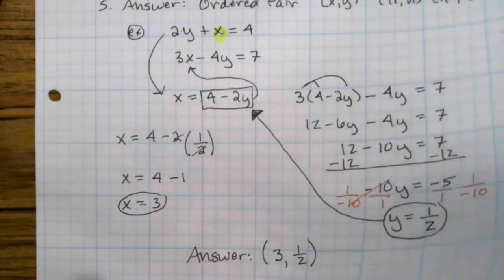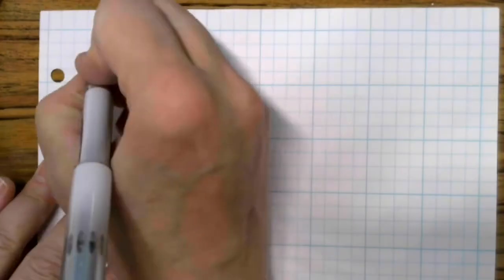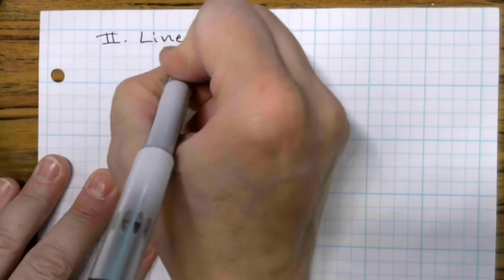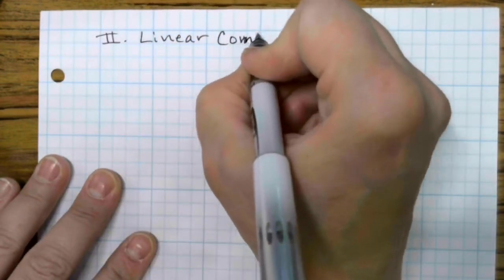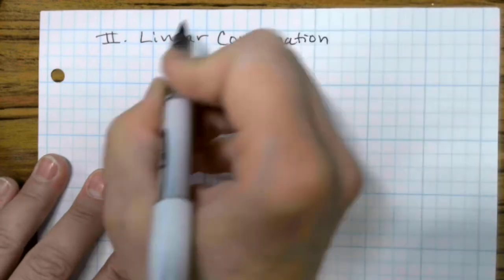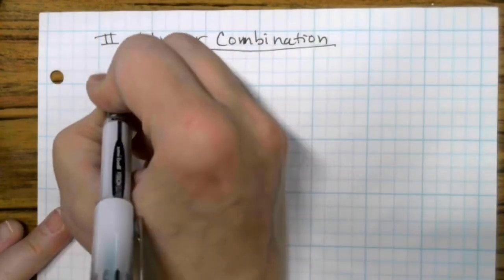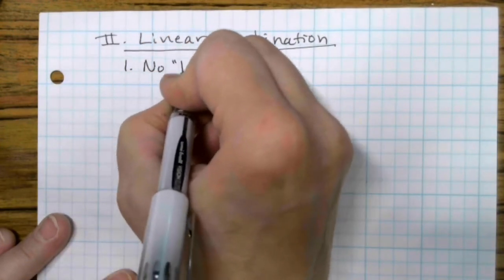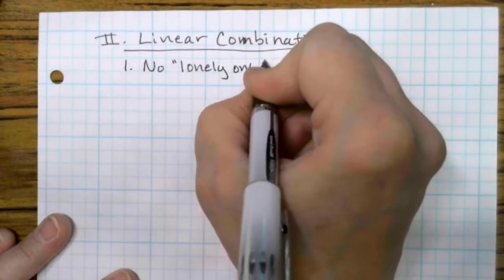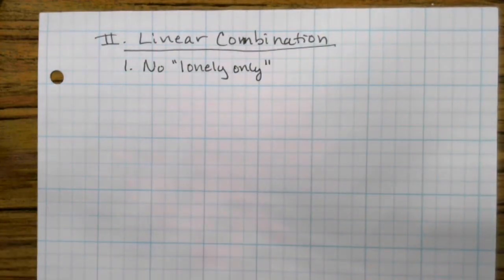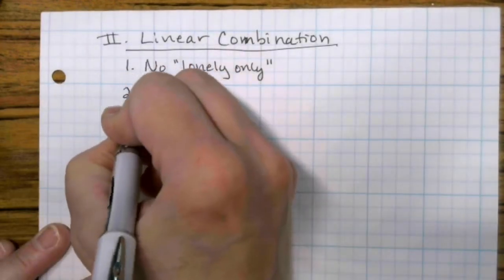Okay, so the second method we're going to learn is linear combination method. So linear combination method is used typically if there is no lonely only. They're all, everything has a coefficient on it. So if you were to do substitution method, it would be a real mess because it would be lots of fractions and all kinds of crazy stuff. So what is the process?